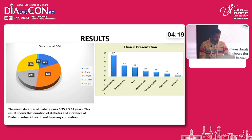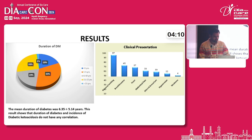Results - Duration of diabetes: the mean duration of diabetes was 6.35 ± 5.14 years. This suggests that the duration of diabetes and incidence of DKA does not show any significant correlation.